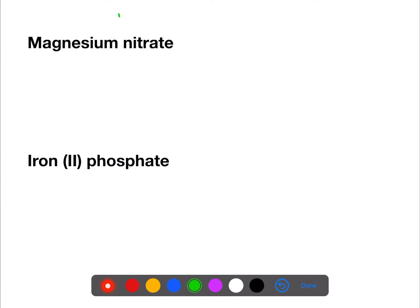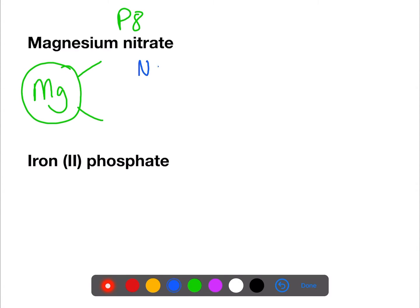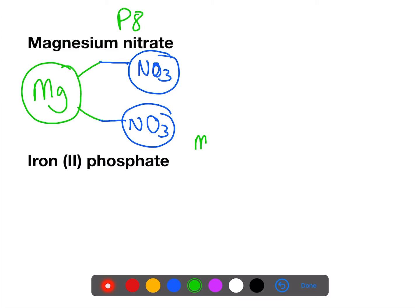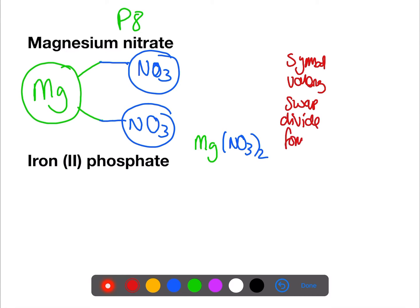These examples have group ions which you can find on page eight of the data book. For the valency picture method: magnesium has a valency of two, nitrate has a formula of NO₃ and is a one-negative ion so it has a valency of one. We can have two nitrates for every magnesium. For this we need to put in brackets to show that we have two nitrates rather than 32 oxygens.